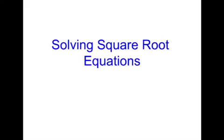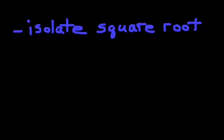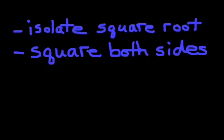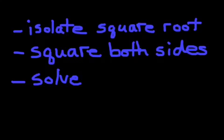We're going to follow a few steps here. First, you want to isolate the square root where it's the only thing on one side of the equation. Occasionally you won't be able to get rid of everything on one side and you'll end up with square roots on both sides, but one side has to have just a square root left on it. Next, we want to square both sides, which will get rid of the square root we've isolated. Then we solve the resulting equation.